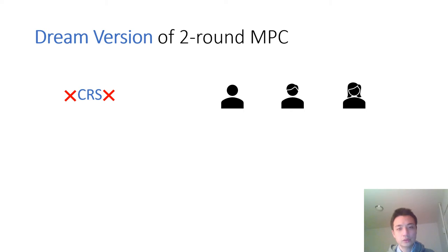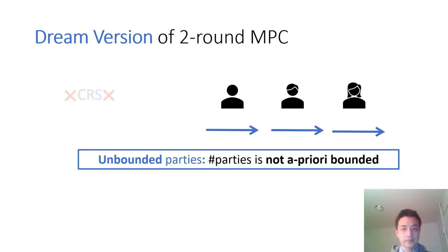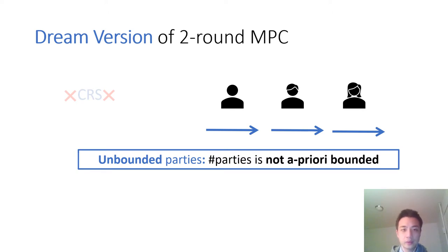First of all, the dream version should be in the plain model — it shouldn't require a trusted setup or a CRS. And it should satisfy the following unbounded parties property, which means the number of parties is not a priori bounded. That is, its first round message should not limit the number of parties that can be involved in the computation.